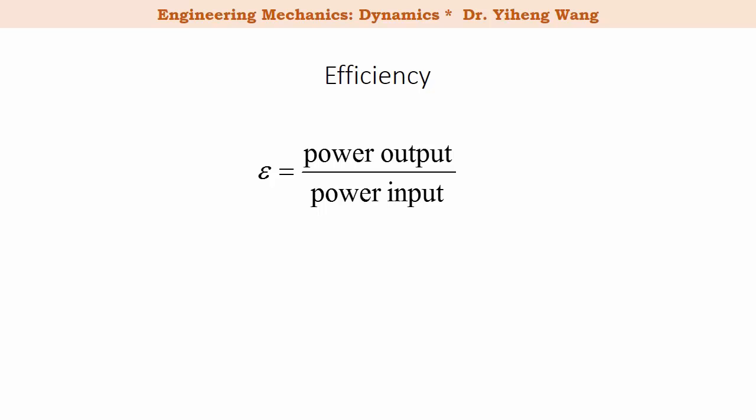The efficiency of a machine is defined as the power output divided by the power input. For example, an electrical motor will convert electrical energy into mechanical energy. Therefore its efficiency is determined as the mechanical power it generates divided by the electrical power supplied to this motor. Since there's always energy loss during energy conversion, the efficiency is always smaller than one.